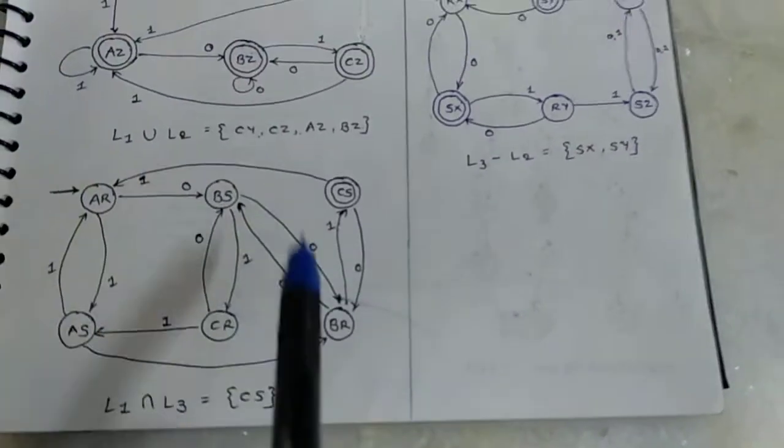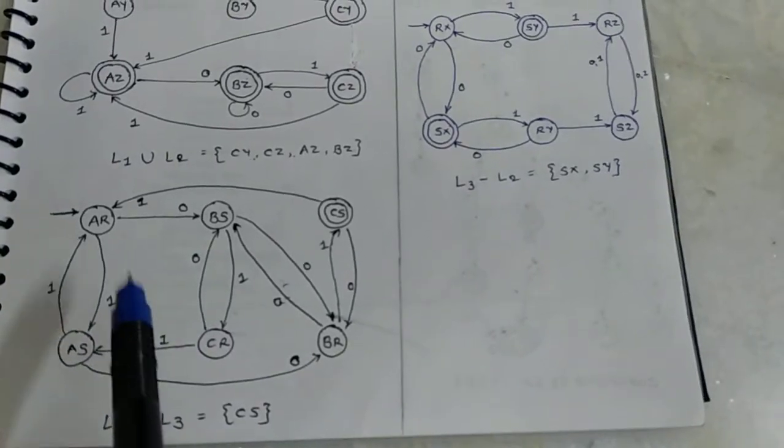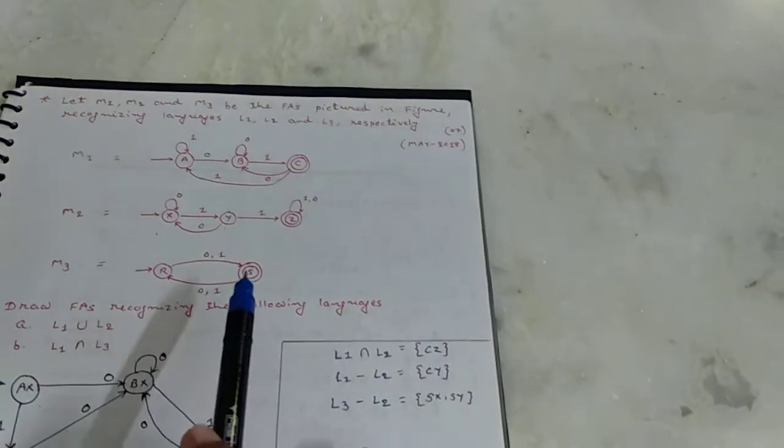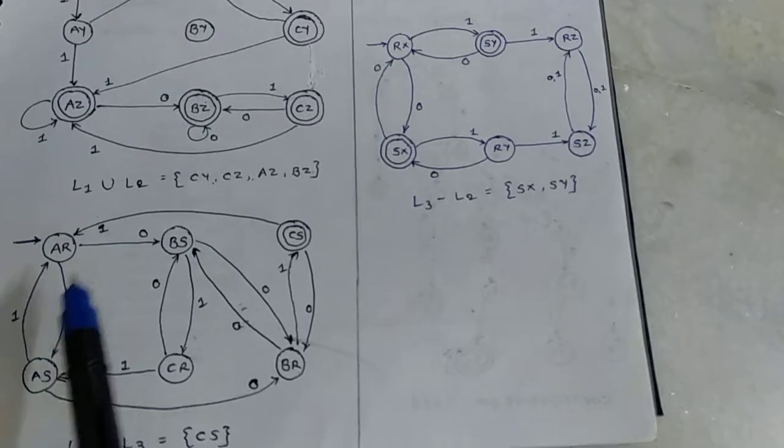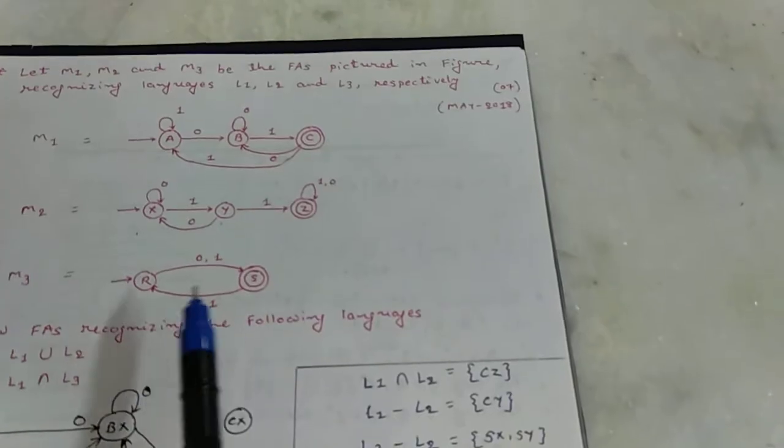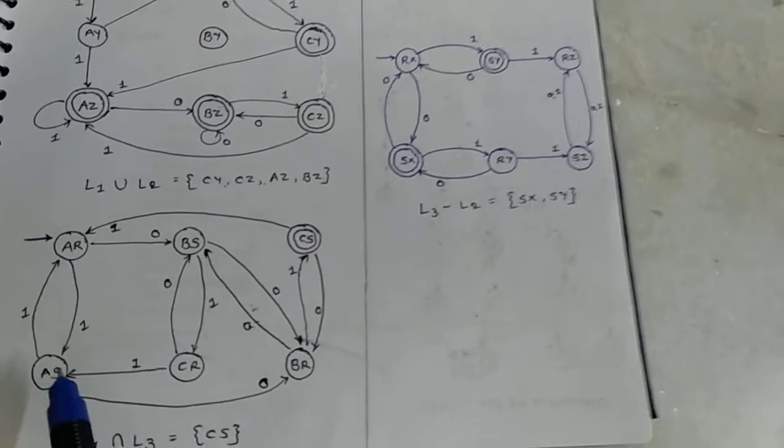And draw the finite automata like this. For AR, A to 0, B, R to 0, S. So AR to 0, BS. A to 1, A, R to 1, S. So AR to 1, AS.